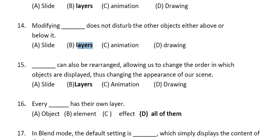Question 15: blank can also be rearranged, allowing us to change the order in which objects are displayed, thus changing the appearance of our scene. The answer is Layers. For example, if you have drawn sun, mountains, and trees, you want the sun at the utmost back, mountains before it, and trees in front. You can adjust the layer sequence by dragging and dropping from this corner.